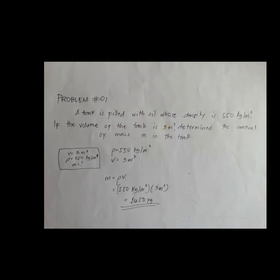Good day everyone and welcome to another engineering problem solving session. A tank is filled with oil whose density is 550 kilogram per cubic meter. If the volume of the tank is three cubic meters, determine the amount of mass in the tank.